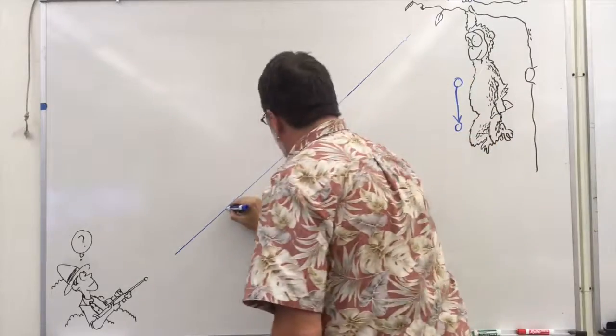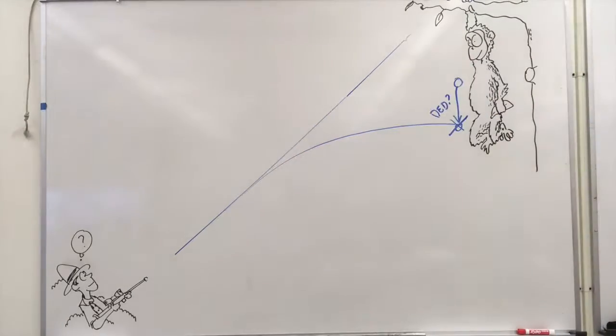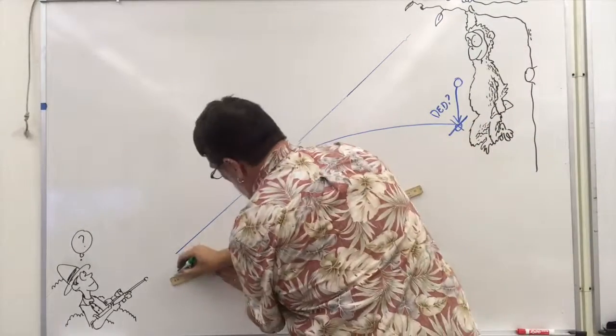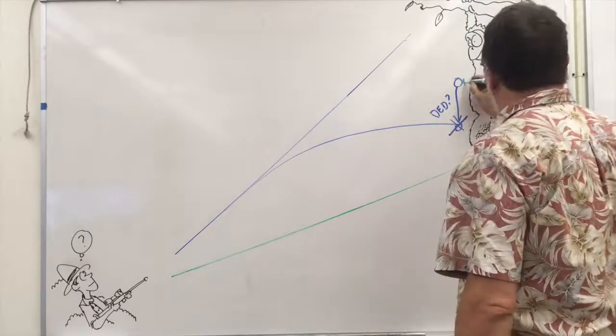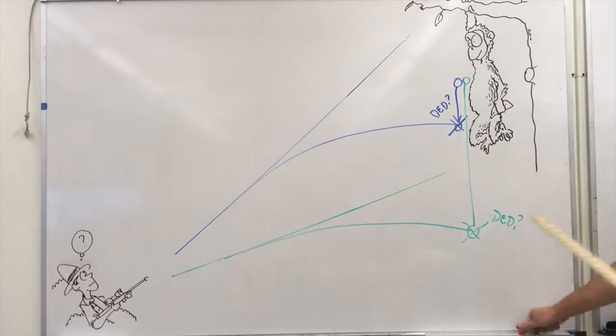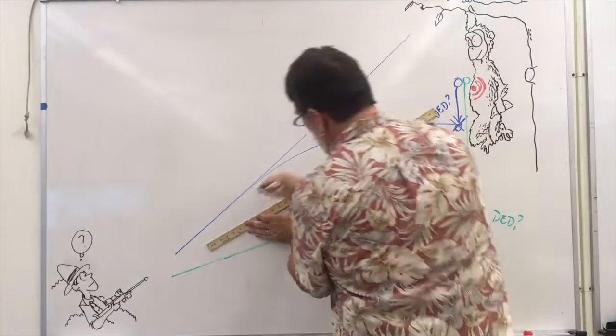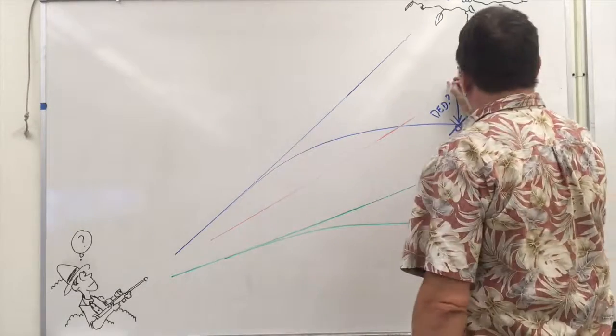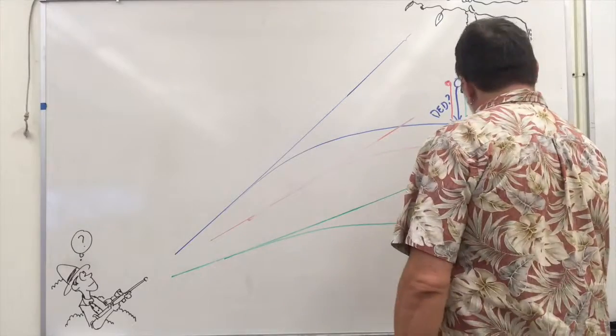Should he aim above the monkey? Since he is firing upwards he reasons that his bullet will drop to meet the monkey. Should he aim below the monkey? The bullet and the monkey are both dropping but this way the monkey should drop into the bullet's path, or should he aim right at the center of monkey mass and hope that the bullet and the monkey meet up in space?